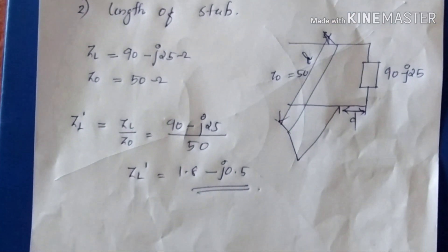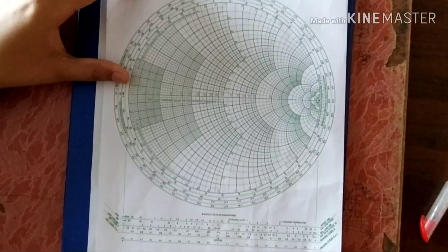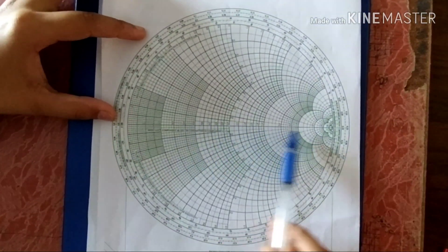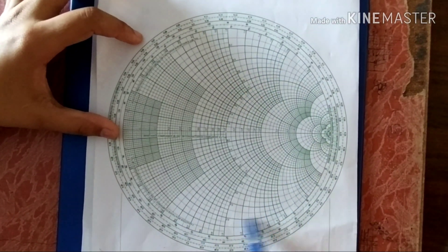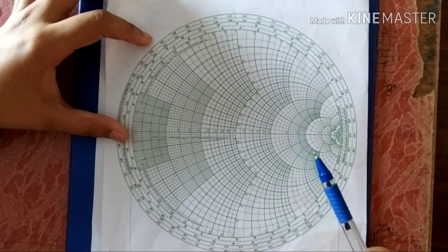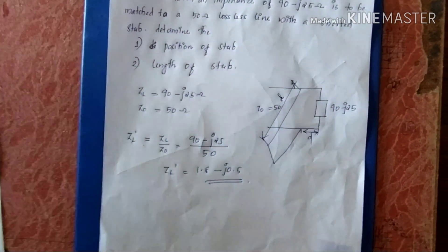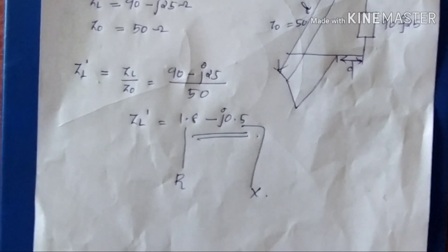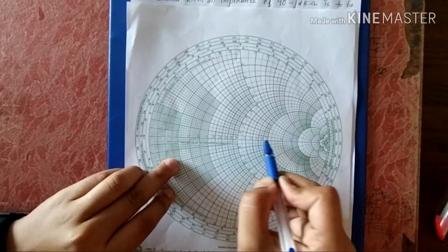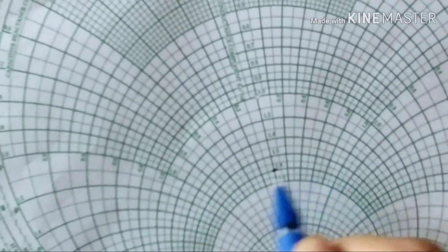We need to plot this value on the Smith Chart. The Smith Chart has R circles and X circles. In this problem, the R value is 1.8 and the X value is minus 0.5. We locate the R equals 1.8 circle on the chart and find the corresponding circle.